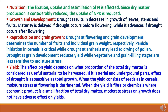Ninth, effect on reproduction and grain growth: drought at flowering and grain development determines the number of fruits and individual grain weight respectively. Panicle initiation in cereals is critical, while drought at anthesis may lead to drying of pollen. Drought at grain development stage reduces yield, while vegetative and grain-filling stages are less sensitive to moisture stress. Tenth, effect on yield: the effect depends on what portion of the total dry matter is considered useful material to be harvested. If it includes aerial and underground parts, drought's effect is as sensitive as on total growth. When yield consists of seeds, as in cereals, moisture stress at flowering is detrimental. When the yield is fiber or chemicals — where economic produce is a small fraction of total dry matter — moderate stress does not have an adverse effect on yields.